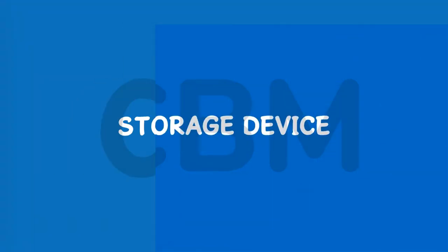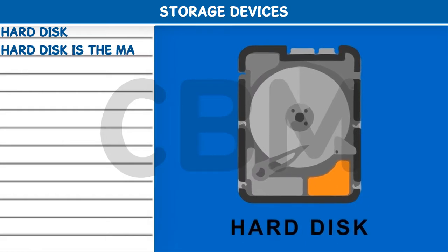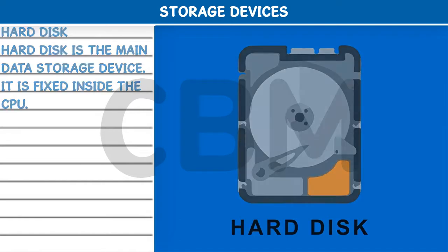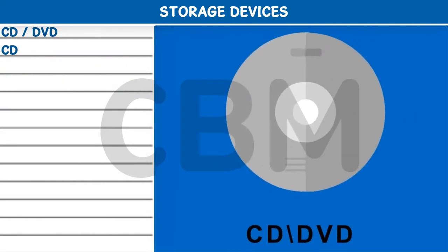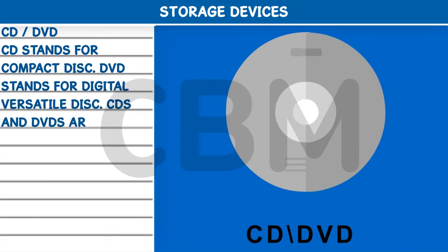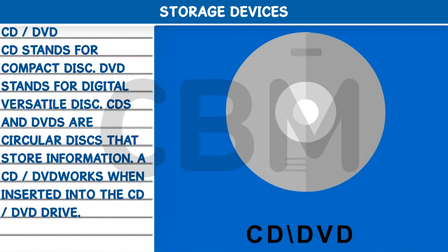Storage Devices — Hard Disk: The hard disk is the main data storage device. It is fixed inside the CPU. CD/DVD: CD stands for Compact Disc and DVD stands for Digital Versatile Disc. CDs and DVDs are circular disks that store information. They work when inserted into the CD or DVD drive.